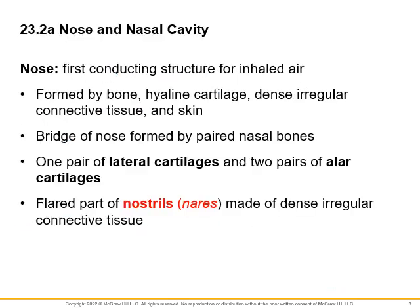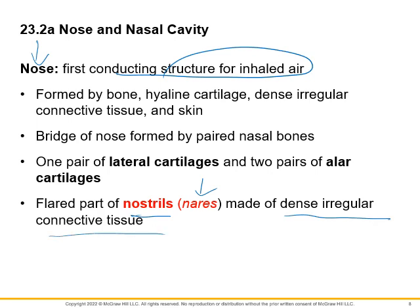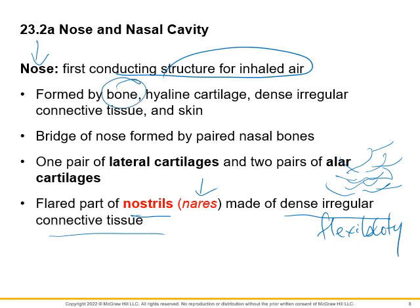The first structure that air enters is the nose. Your nostrils are called nares. The nose is made up of dense irregular connective tissue — with fibers running every which direction, giving great flexibility. You also have bone here — nasal bones at the bridge of the nose — as well as hyaline cartilage and skin.